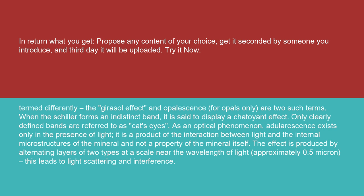As an optical phenomenon, Agilorescence exists only in the presence of light. It is a product of the interaction between light and the internal microstructures of the mineral, and not a property of the mineral itself. The effect is produced by alternating layers of two types at a scale near the wavelength of light, approximately 0.5 micron. This leads to light scattering and interference.